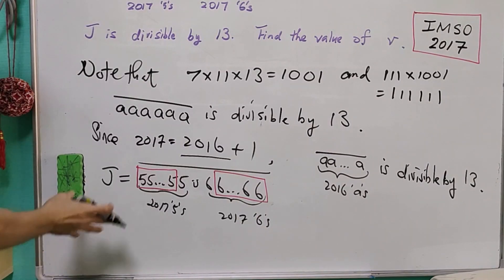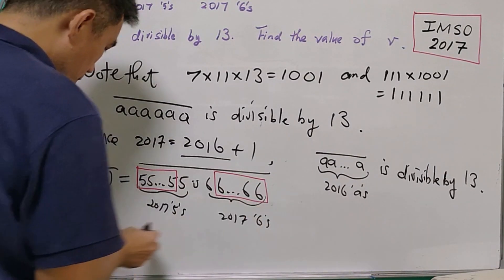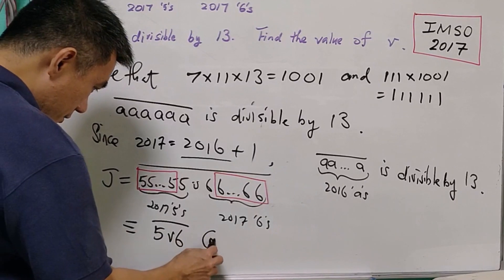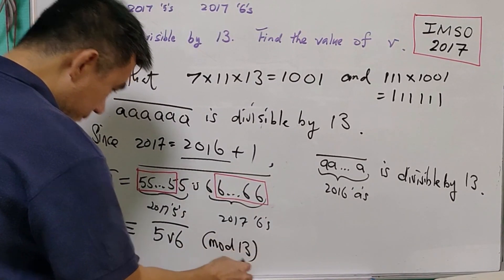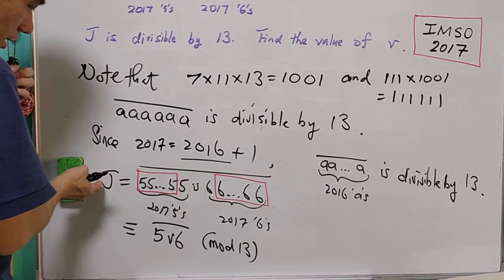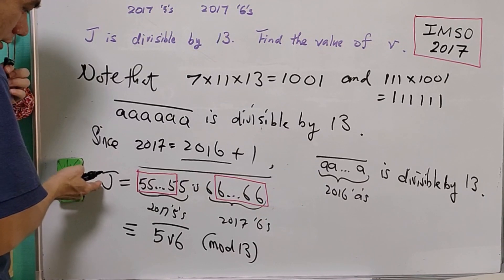So this number J will be congruent to 5V6 mod 13. So if J is divisible by 13, then this 3-digit number 5V6 is also divisible by 13.